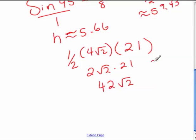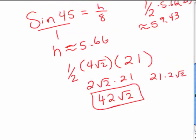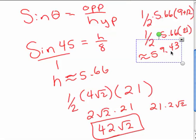So that's 42 root of 2, because you can rearrange 21 times 2 root of 2. And so 42 root of 2. That's the exact answer. The 59.43 is an approximated answer. And so that's the two ways you can do it. You can do it exactly, or you can do it approximated in this case.